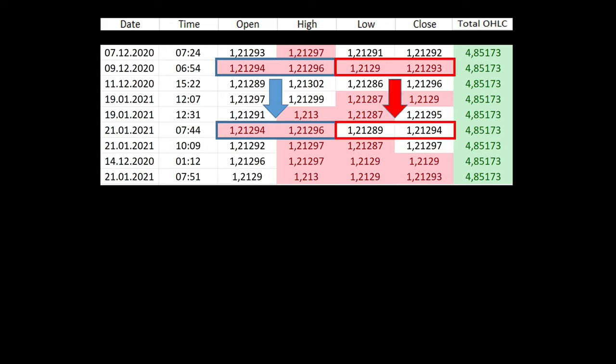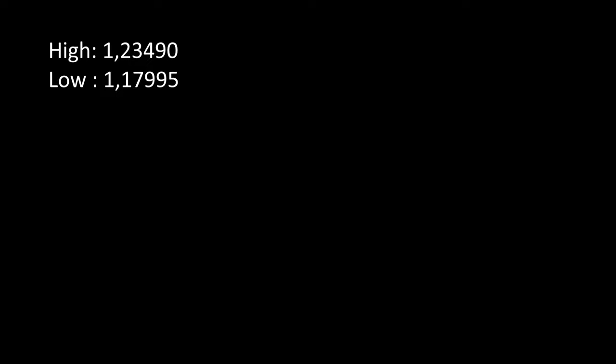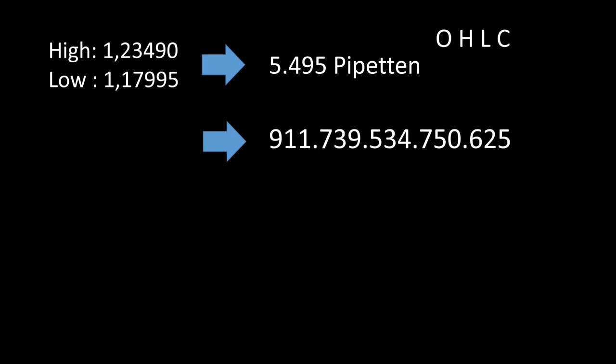There is also no match in the next column section. To do this, let's create a rough probability calculation. The highest price was 1.23490 and the lowest price was 1.17995. That is a total of 5,495 pipettes. Since there are four different candle values, we would have to raise these 5,495 pipettes to the power of four. That brings us to over 911 trillion possibilities.